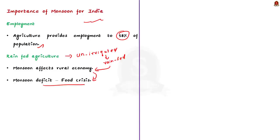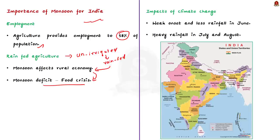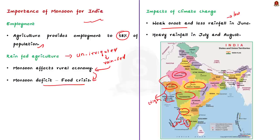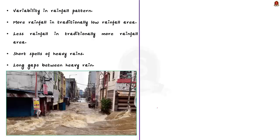Now the monsoon is affected by climate change. This year's onset of monsoon was pretty weak — rainfall in Kerala and Karnataka in June was below average. But in July and August, rainfall picked up mainly in central India, which historically received less rainfall. Madhya Pradesh, Rajasthan, Gujarat and parts of Maharashtra received excessive rainfall, while West Bengal, Bihar and Jharkhand, which normally receive good monsoon rainfall, received less rains.